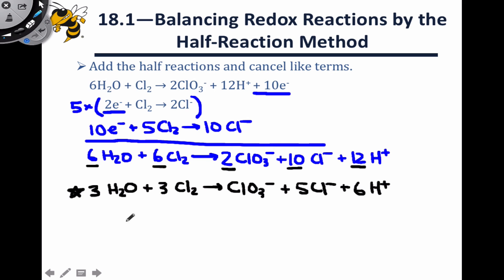So let's review briefly how we went through this process. The first step was looking at the unbalanced chemical equation, which if we think back to the beginning of this problem was actually quite simple, Cl2 going to ClO3- minus and Cl-.